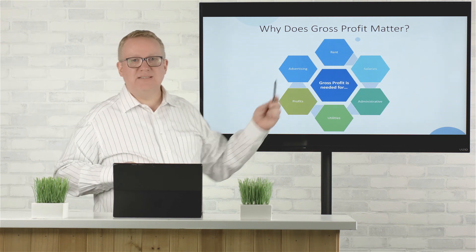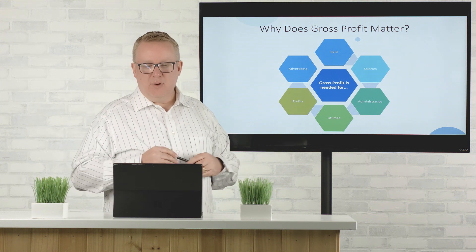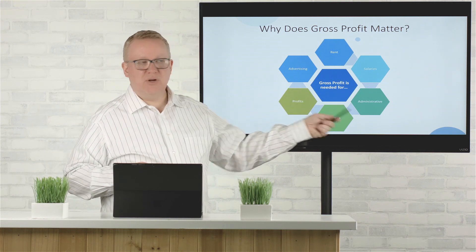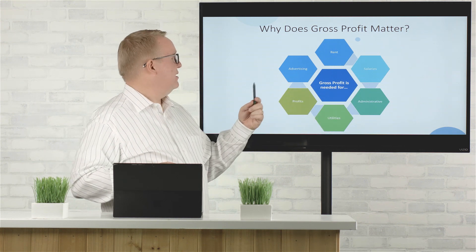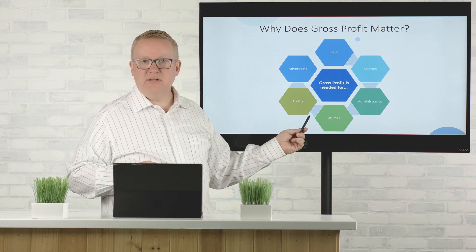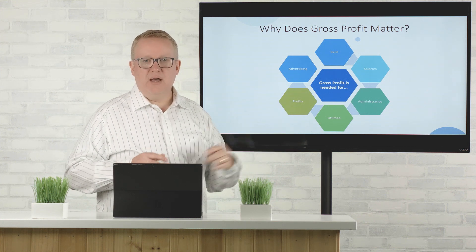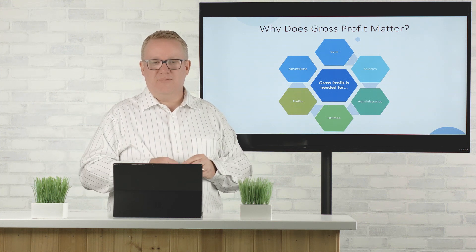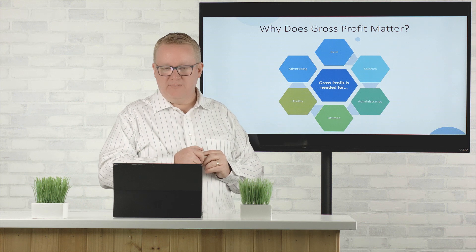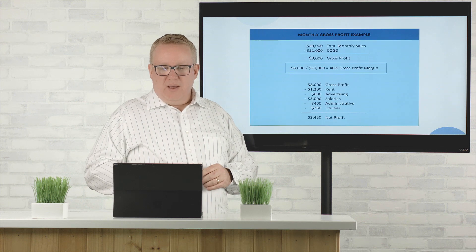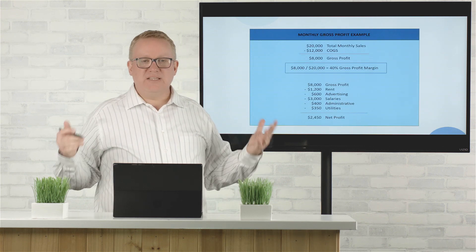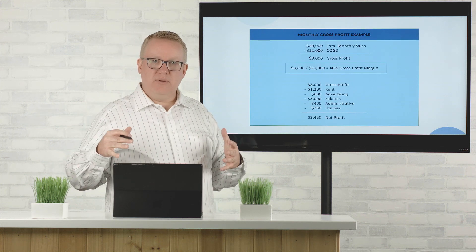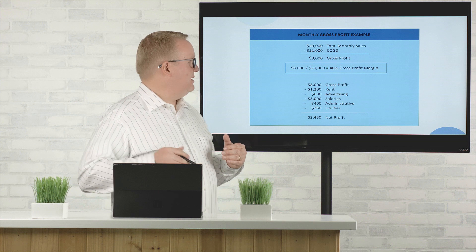So we have things like rent, salaries, administrative costs, advertising, utilities, and then in the end profits — and we want those to be as big as possible. So let's look at a more detailed example and see how that plays out.